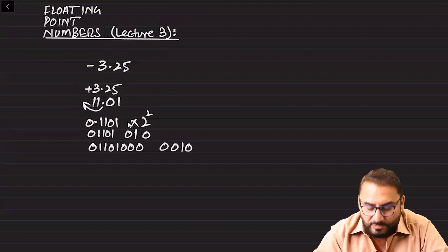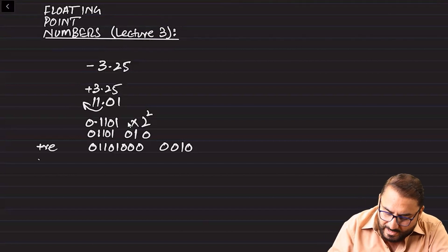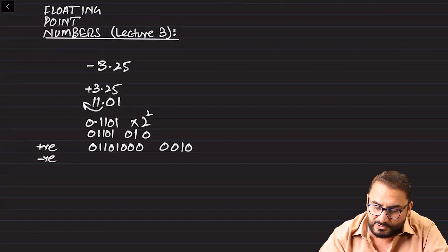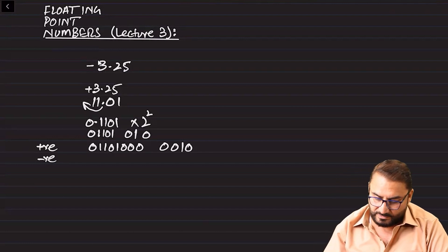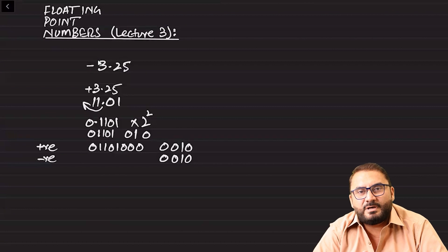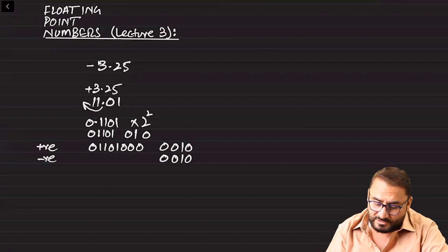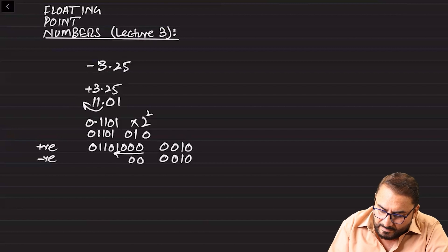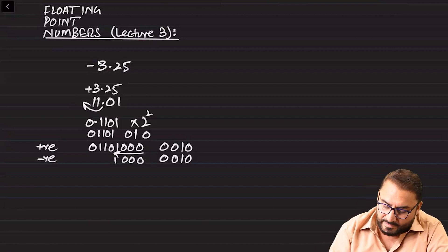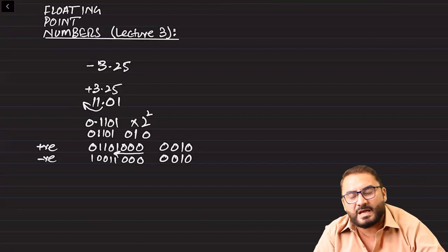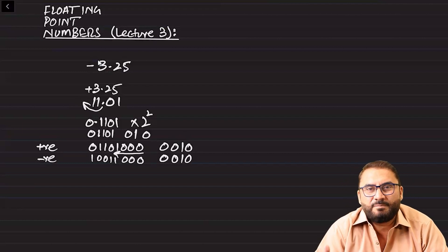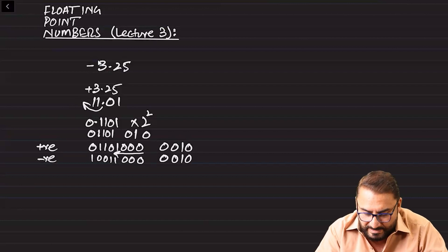Now we have to convert it back to a negative number because the original number was negative 3.25. For that reason, we keep the exponent the same, because the exponent is merely the number of times we move the point. For the mantissa, from the right side to the first one, we keep the bits the same and toggle or invert the rest. This is the same strategy as two's complement to turn a positive into negative — but just for the mantissa.